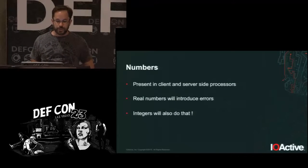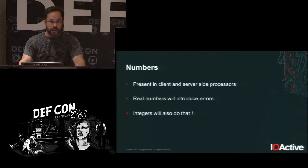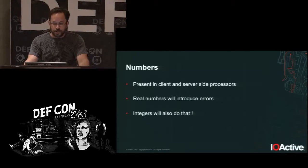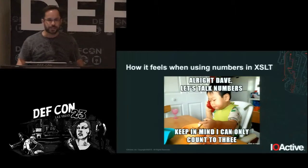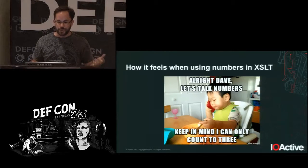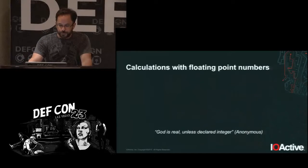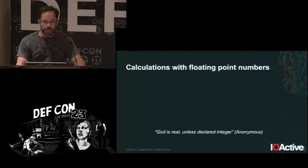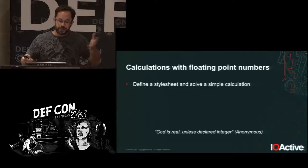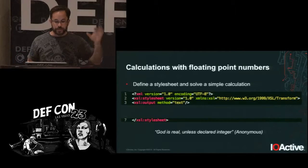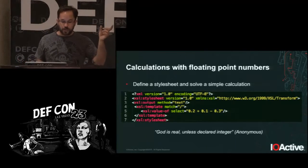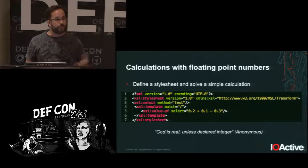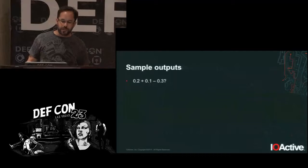The first issue is present in both client-side and server-side, affecting both floating-point numbers and integers. As I was testing, certain calculations were not working as expected — additions and subtractions were giving unexpected results. I defined a simple stylesheet performing the calculation: 0.2 + 0.1 - 0.3, which should equal 0.